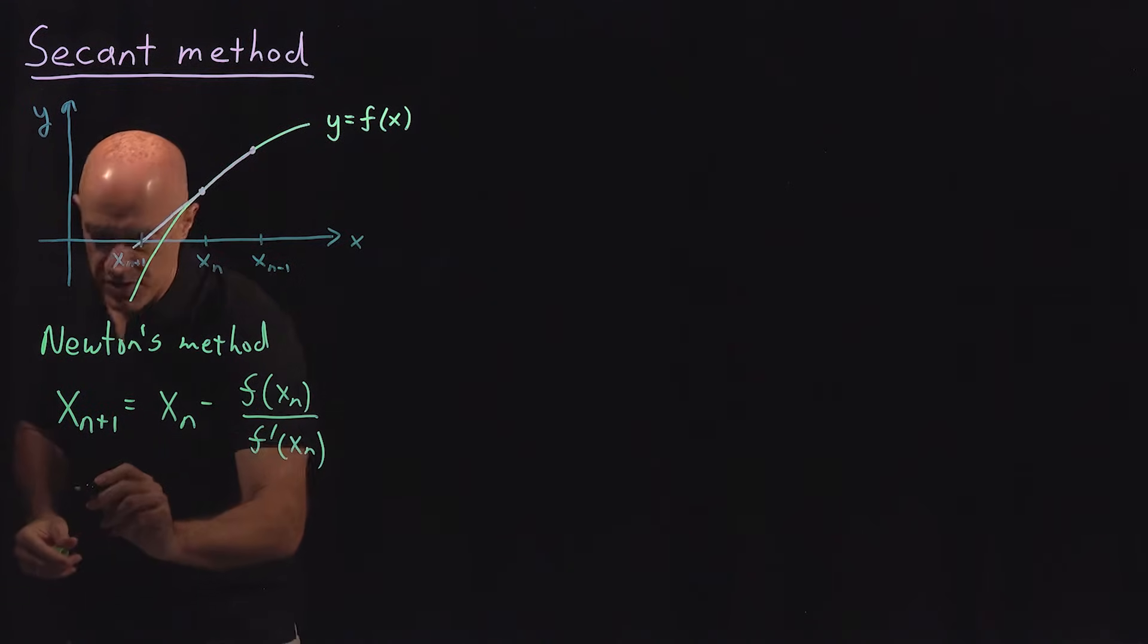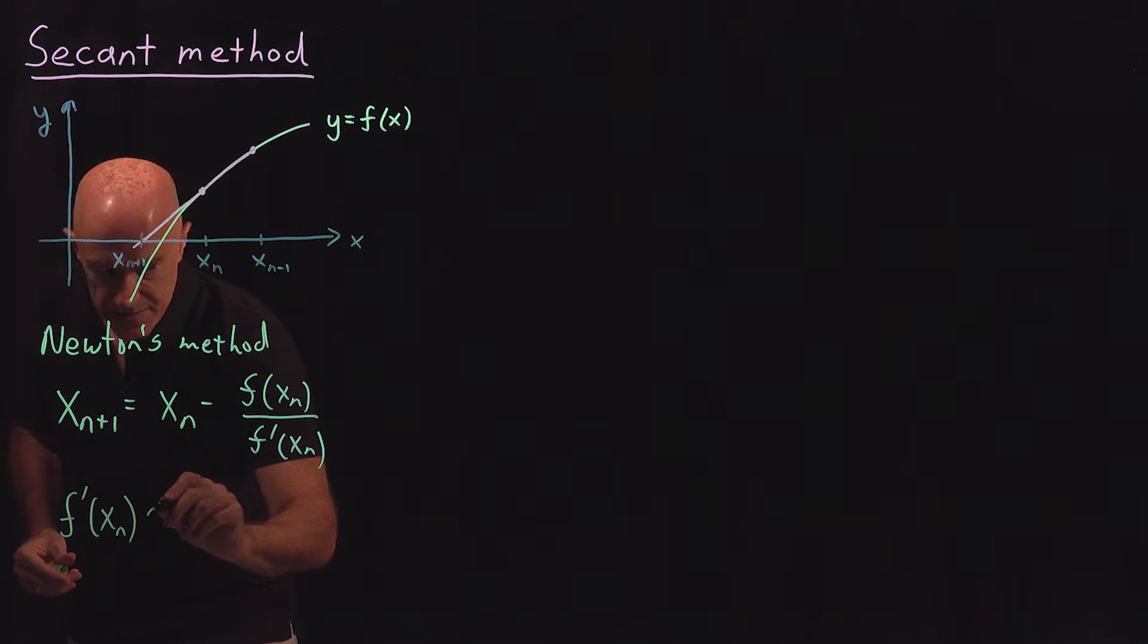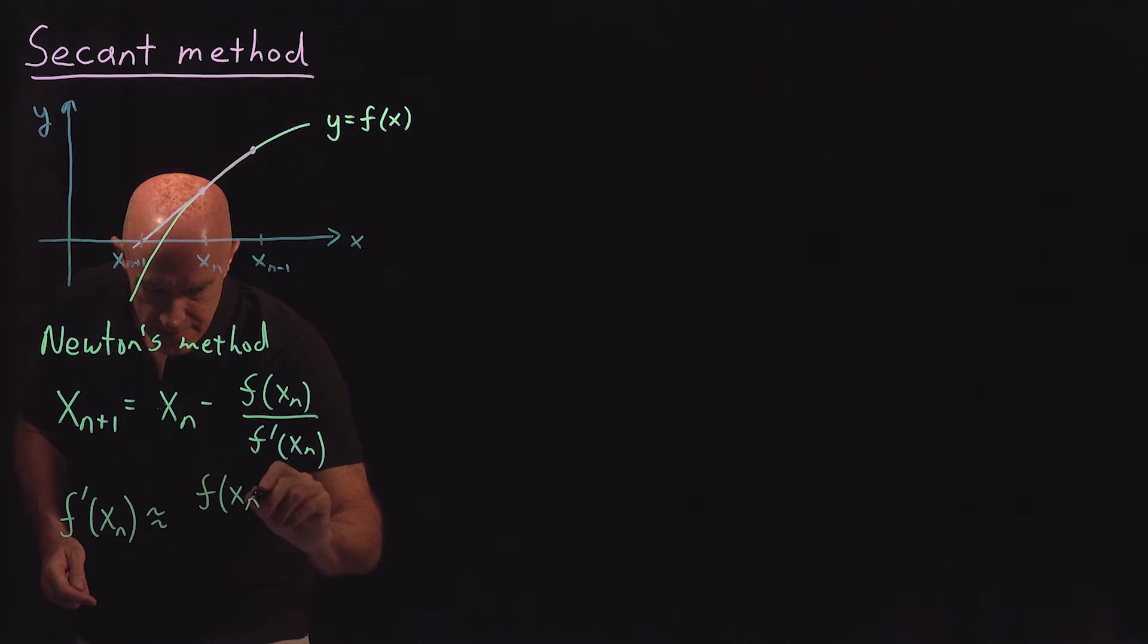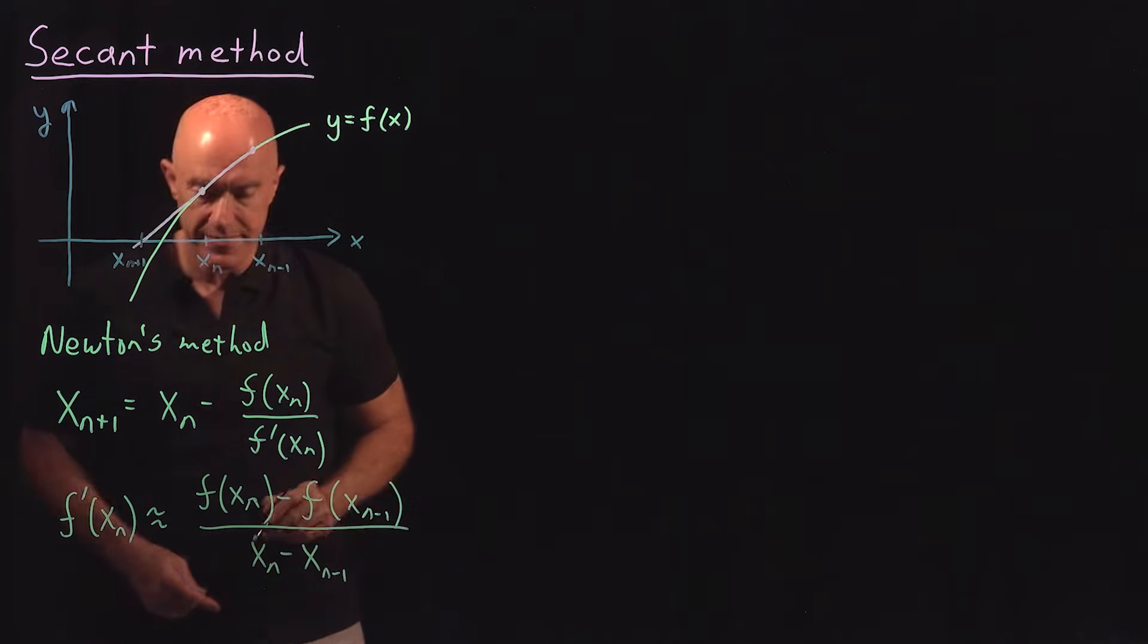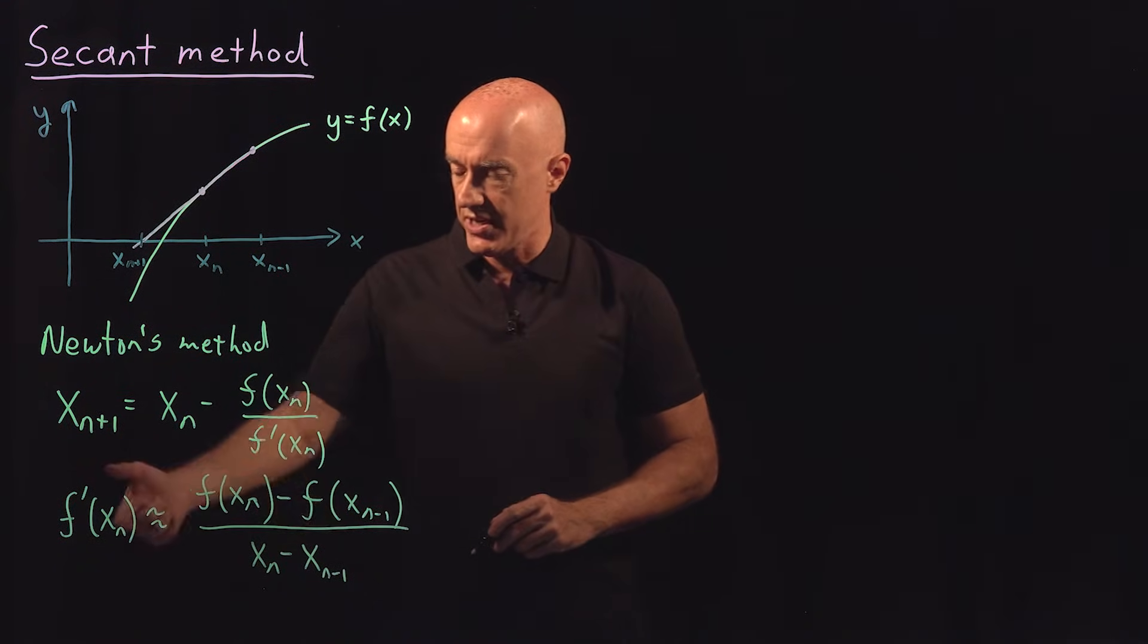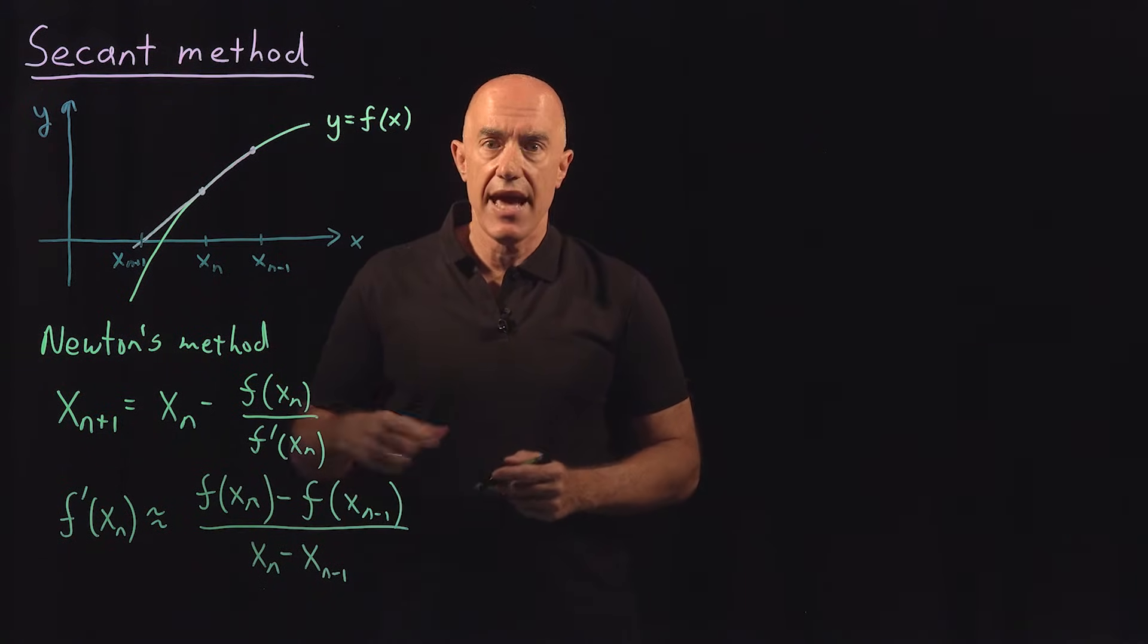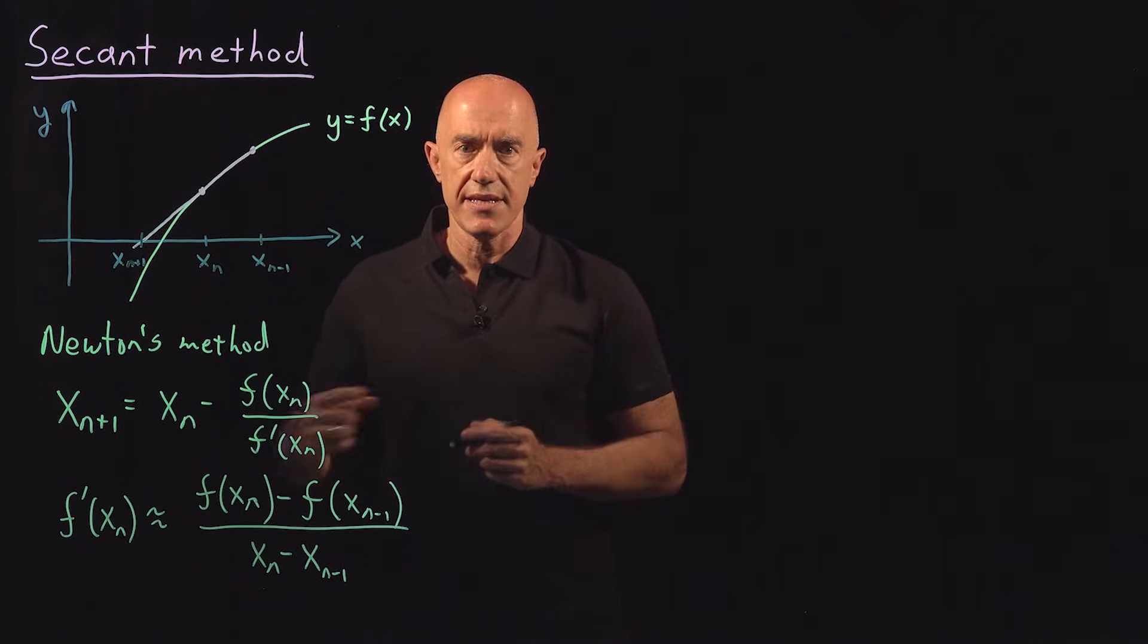So what we do is approximate this derivative. So f'(x_n) is approximately Δf/Δx, which is [f(x_n) - f(x_(n-1))]/[x_n - x_(n-1)]. That's the normal definition of the derivative when x_(n-1) approaches x_n. But here, there are two distinct points. So that defines the secant method.